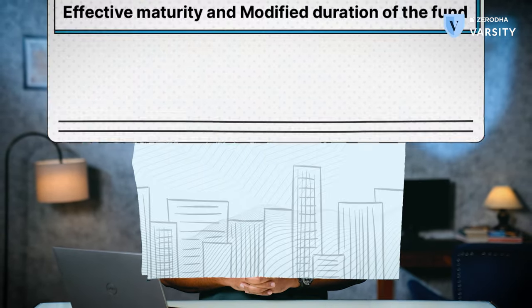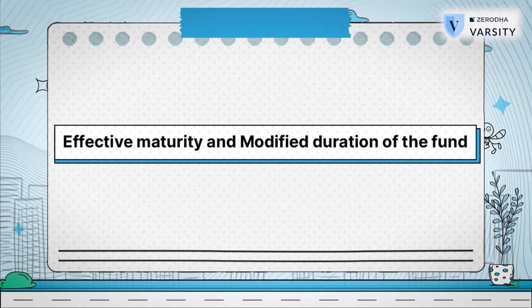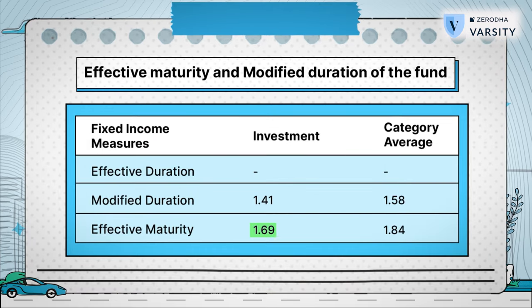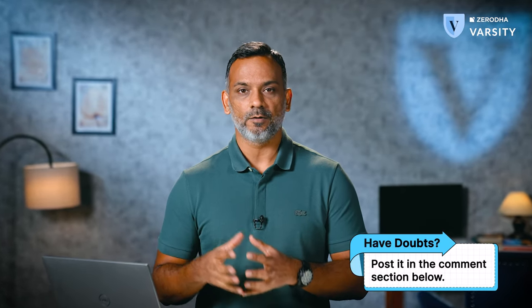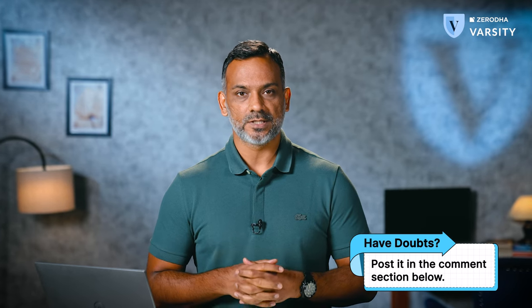The fund manager is backing a lot more AA bonds compared to the rest in the category. The next step when analyzing a debt mutual fund is to look at the effective maturity and the modified duration of the fund. The effective maturity for this fund is 1.69, whereas it's 1.84 for the rest in the category — this gives you a sense of the tenure of the bonds. Short tenure implies that the fund manager is averse to taking credit risk. The modified duration, which is basically the sensitivity of the bond's price with respect to change in interest rate, is also lesser for this fund compared to the rest in the category.